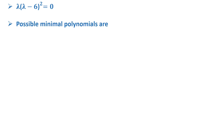Now we have two candidates for the minimal polynomial: either λ(λ−6) = 0, or λ(λ−6)² = 0.